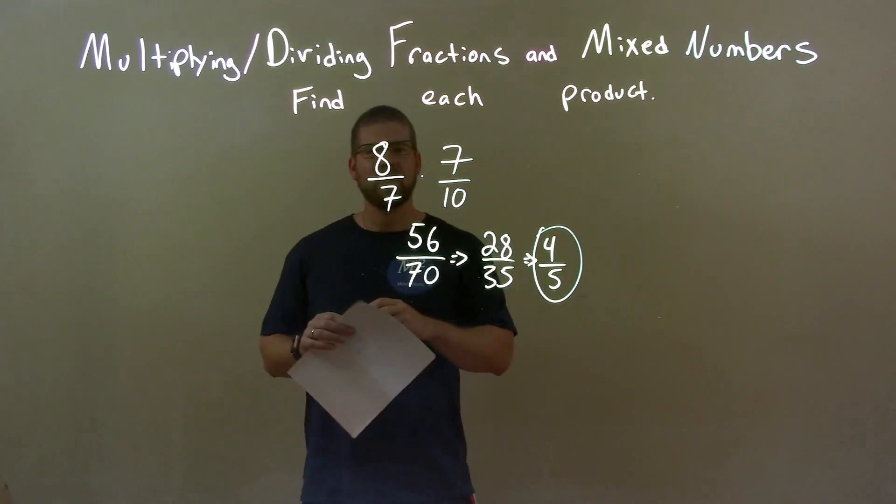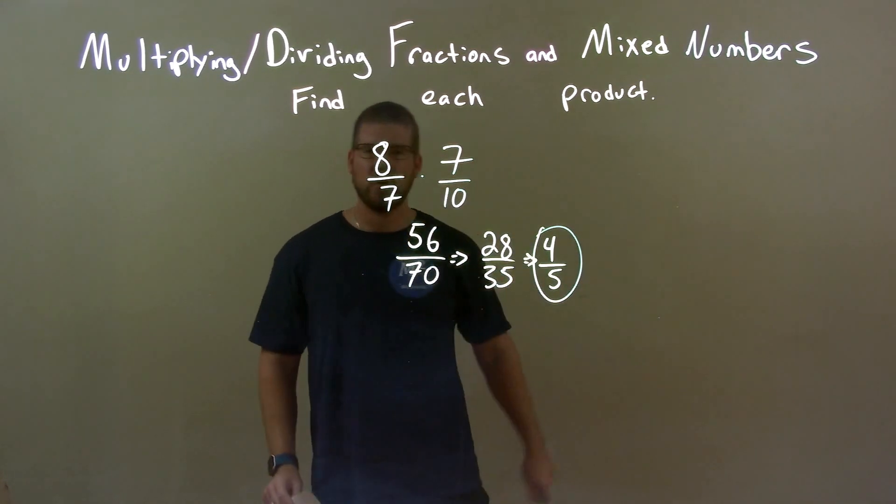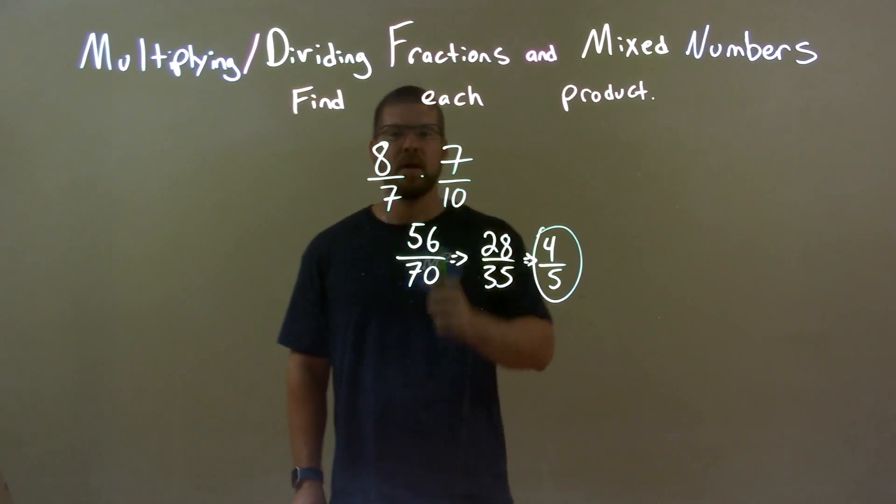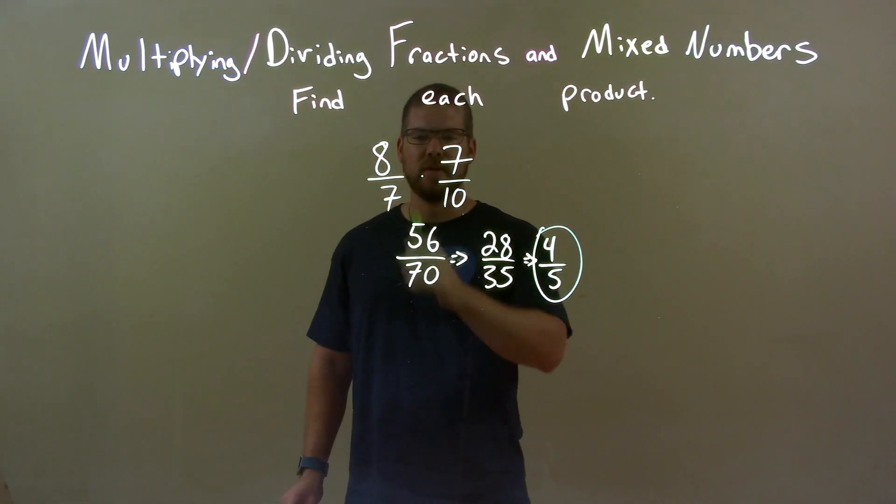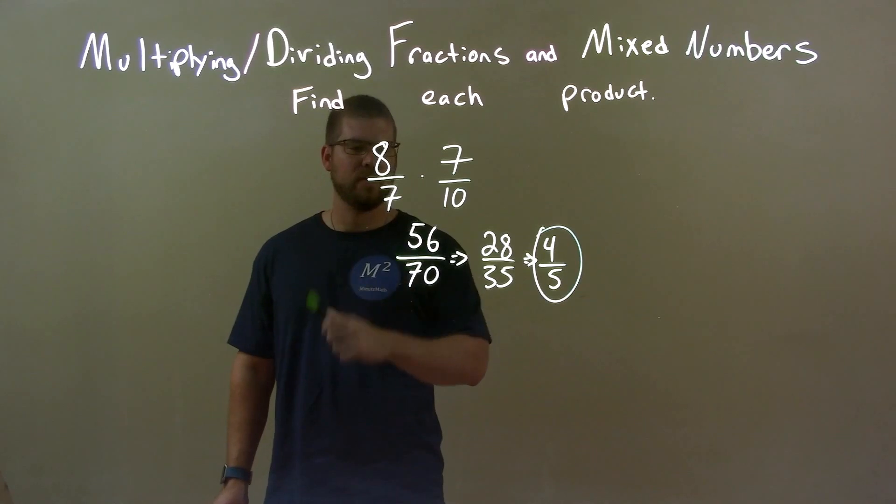So quick recap, we're given 8 over 7 times 7 over 10. We multiply across the numerator, 8 times 7 is 56, and then across the denominator, 7 times 10 is 70.